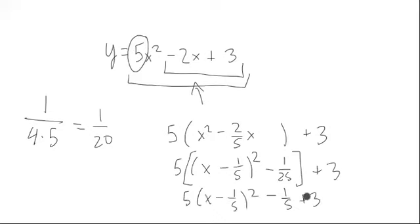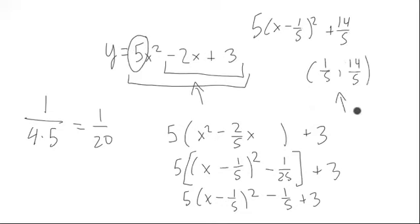So we end up getting 14/5 right here. So we end up getting 5 times x minus 1/5 squared plus 14/5. So the center point would be at 1/5, 14/5, or the vertex—that would be the vertex of the parabola.